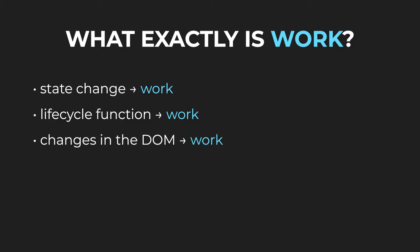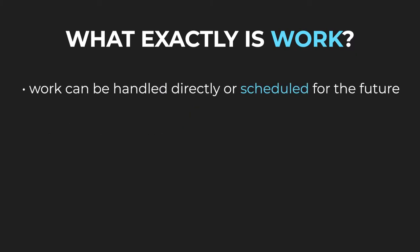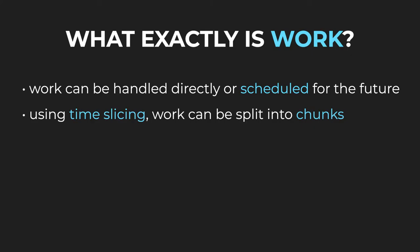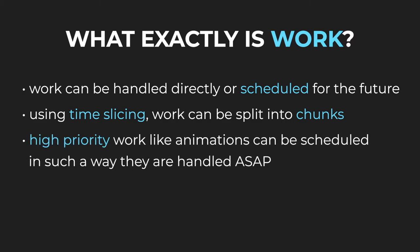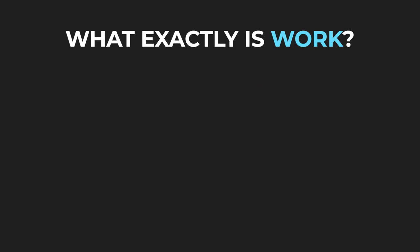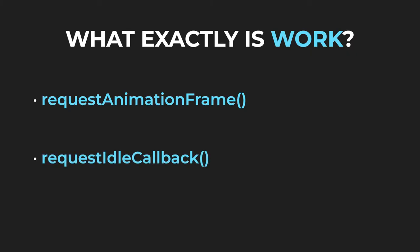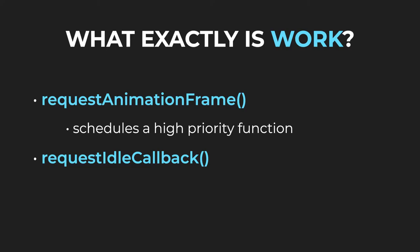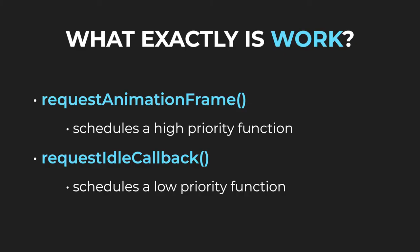We can see that work heavily depends on the fiber. Whenever React processes a fiber, it either handles the work directly or schedules it for the future. Using a feature called time slicing, React can split work into chunks. If some work has a very high priority, like an animation, React can schedule it to be handled as soon as possible. But if some work has a low priority, for example a network request, React can simply delay it. It uses the functions RequestAnimationFrame and RequestIdleCallback to do that. RequestAnimationFrame schedules a high priority function on the next animation frame, and RequestIdleCallback schedules a low priority function during an idle period. Those functions are supported in the majority of browsers, but in case they aren't, there exists a polyfill.